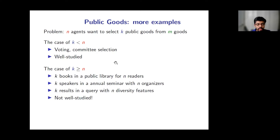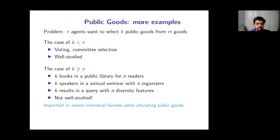Another important example is diverse search results for a query. Given a query — say, computer scientist images in a database — we would like to output k results reflecting diversity across n specified features like gender, race, or ethnicity. Here again k is at least n. These examples highlight the importance of the setting where k is at least n, which is our main focus. A crucial point is that it's important to ensure fairness at an individual level — for instance, ensuring there are books that reflect the tastes of all readers in a public library.